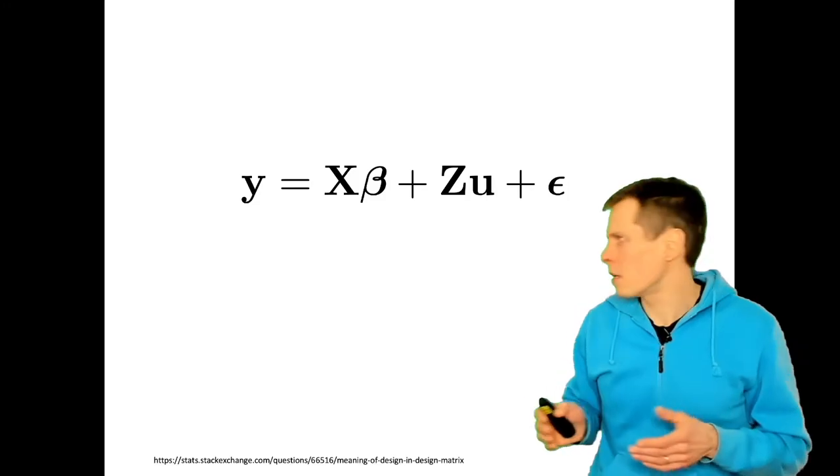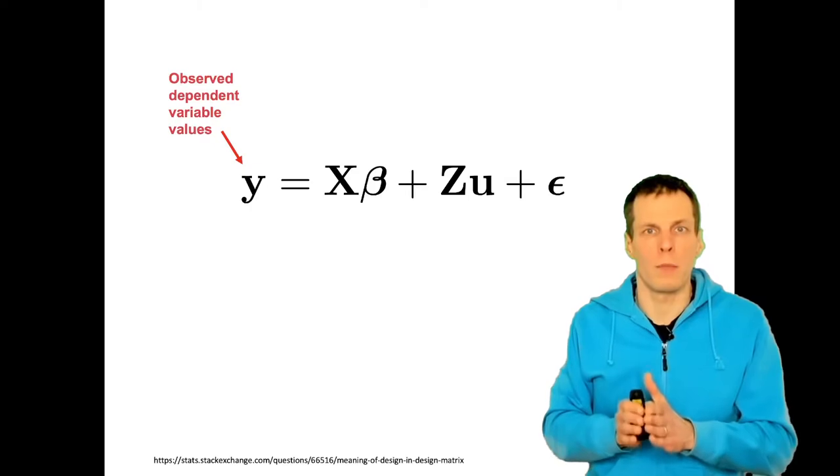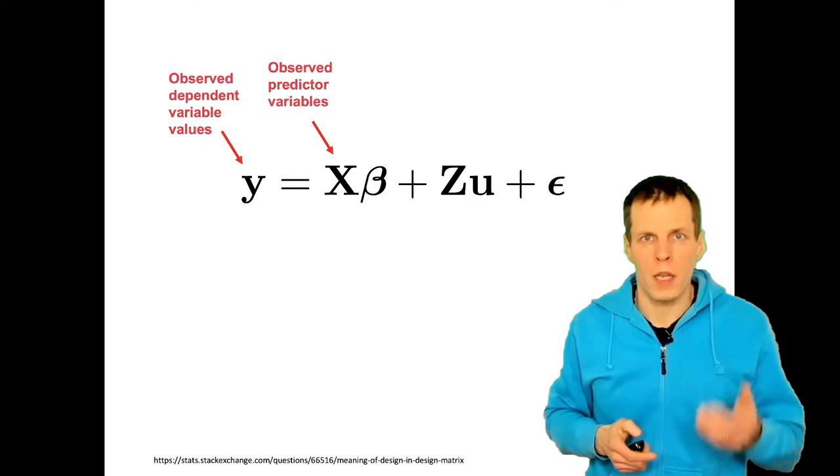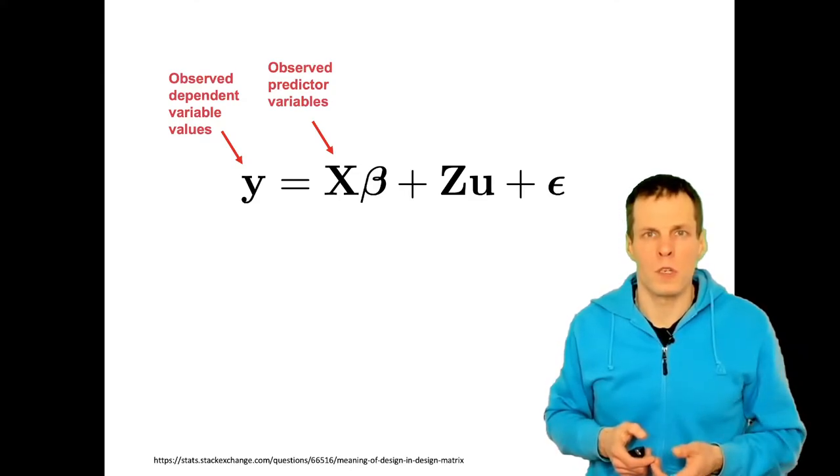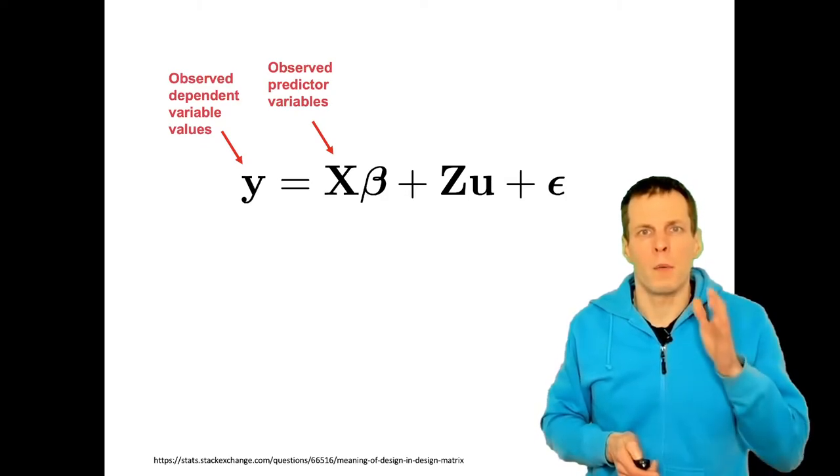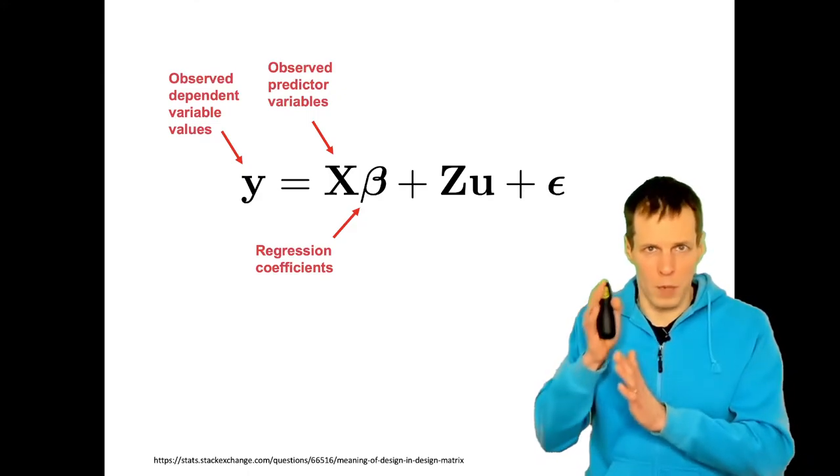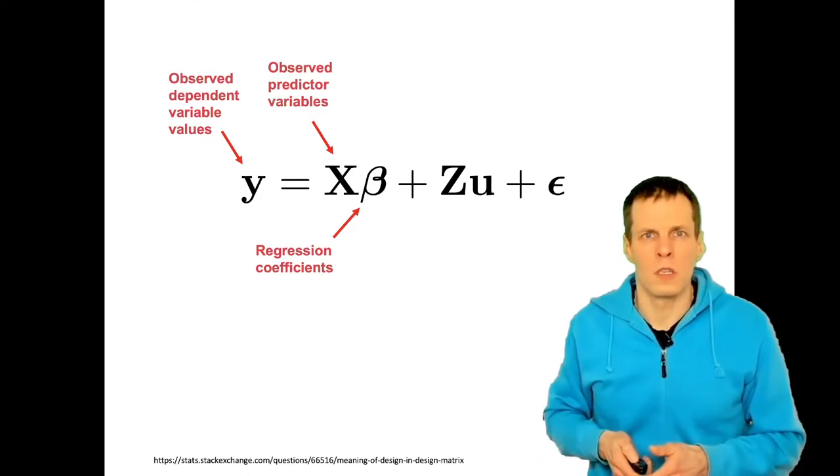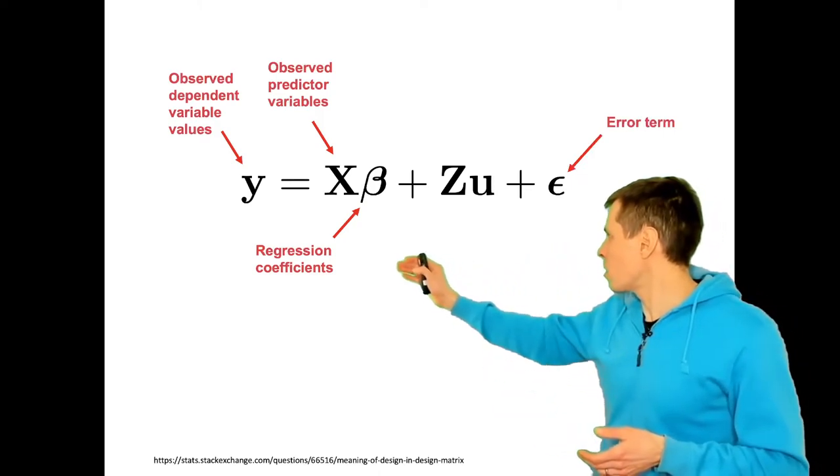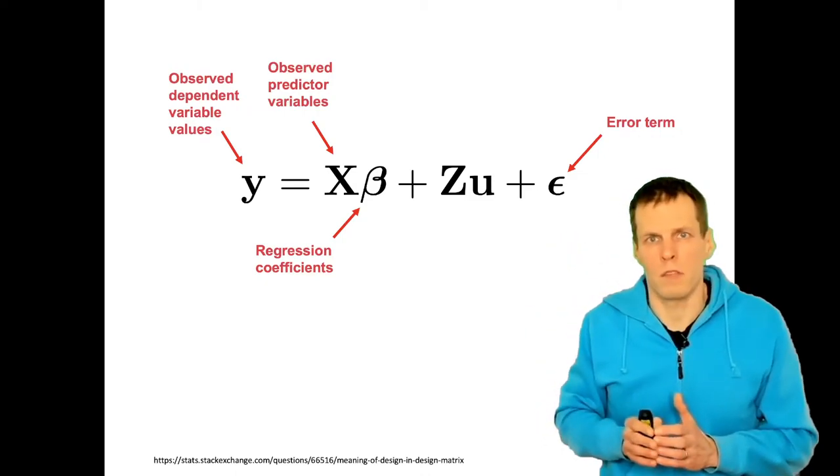We have a few elements here. We have y, the observed dependent variable values. It's a vector, so we have one column, multiple values for each case. Then we have a matrix X of the observed predictor variables with multiple columns and rows. Then we have the vector β of regression coefficients. There's just one model and multiple coefficients in rows. Then we have the error term ε, and this y equals Xβ plus ε is also just a linear regression model in matrix form.